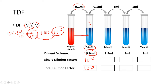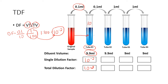Now let's look at tube number 2. I'm going to change my colors for each of these tubes. What's the dilution factor just from tube 1 to tube 2? It's the same — it's going to be a 0.1 mil transfer into 9.9 mils, so it's exactly the same dilution factor: 10 to the minus 2.